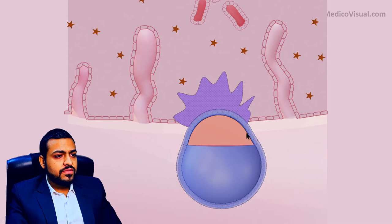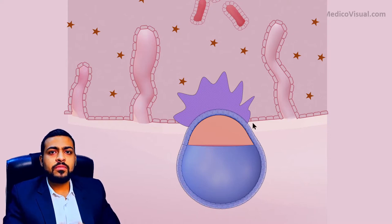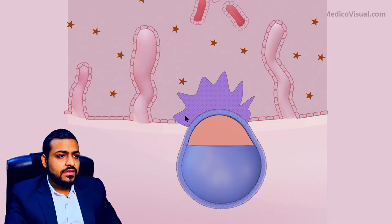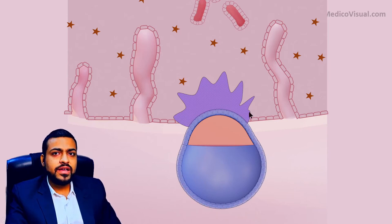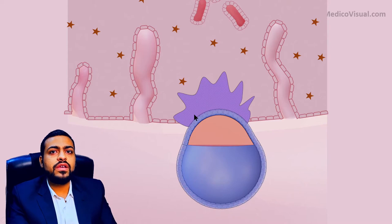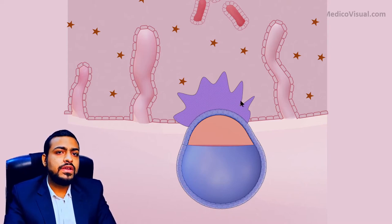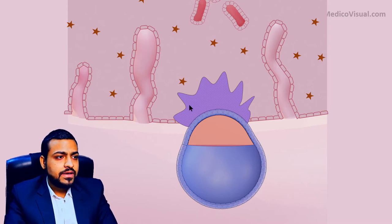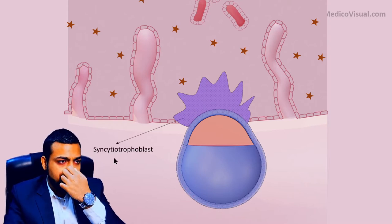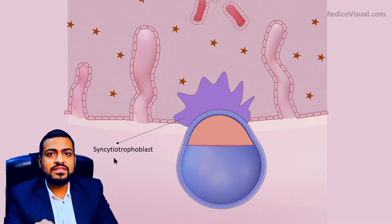At the end of the first week of development after fertilization, the embryo is partially embedded into the endometrium of the mother. The trophoblast has two layers by now. The first layer does not have clear-cut cellular boundaries — it consists of a single mass of nuclei interspersed together. It is called syncytiotrophoblast because it acts as a syncytium.